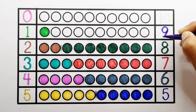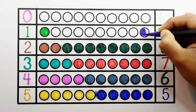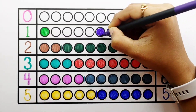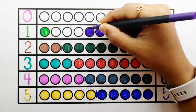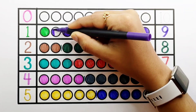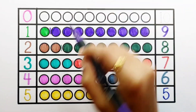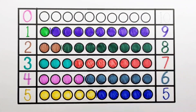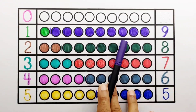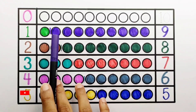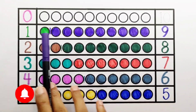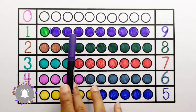Number 9 — 1, 2, 3, 4, 5, 6, 7, 8, 9 — 9 balls. 1 plus 9 makes 10: 1, 2, 3, 4, 5, 6, 7, 8, 9, 10. 1 plus 9 equals 10.